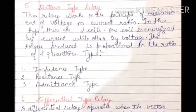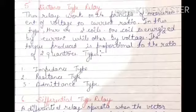Then we have the distance type relay. This relay works on the principle of measurement of the voltage to current ratio. There are two coils: one coil is energized by the current and the other coil is energized by the voltage. The torque produced is proportional to the ratio of these two quantities. When the ratio reduces below a set value, the relay operates.